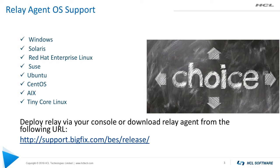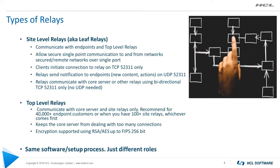You can deploy the relay agent easily via a fixlet in your console, or by downloading and running the relay agent manually from the following URL: support.bigfix.com/bes/release. Depending on the size of your organization, relays can serve in different roles.